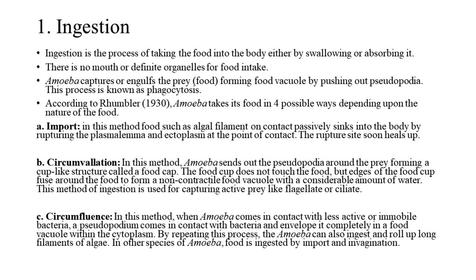B. Circumvallation: In this method, amoeba sends out pseudopodia around the prey forming a cup-like structure called a food cup. The food cup does not touch the food, but the edges of the food cup fuse around the food to form a non-contractile food vacuole with a considerable amount of water. This method is used for capturing active prey like flagellates or ciliates.